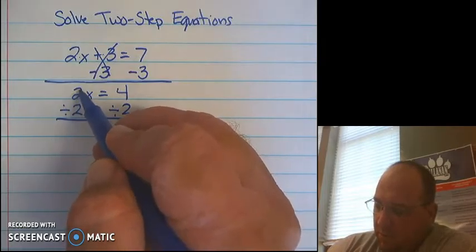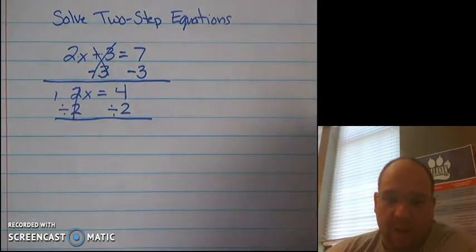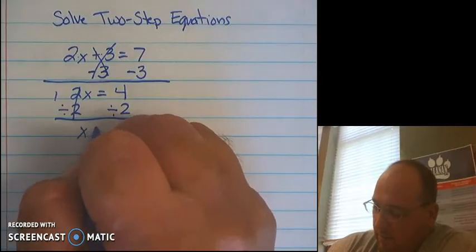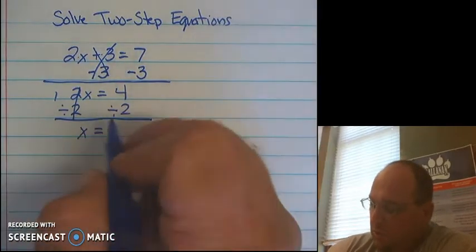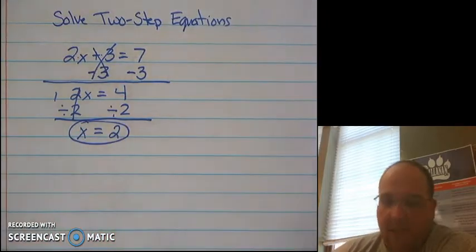When I take 2 divided by 2, this gives me 1. And we know that identity property 1 times x gives me x. 4 divided by 2 will give me a solution of 2. So I have an answer of x equals 2.